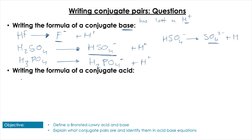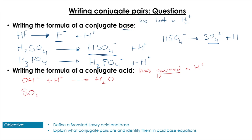For the inverse process with bases, we add a proton to find conjugate acids. OH⁻ plus H⁺ gives H₂O. And for SO₄²⁻, adding H⁺ gives HSO₄⁻ — the inverse of the process we did earlier.